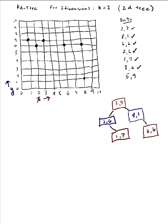Next I have (8,6), going here on the grid. Inserting it: 8 is greater than 3 so I go right; 6 is greater than 1 so I go right; 8 is greater than 6 so I go right again. I now have a blue node here for (8,6).